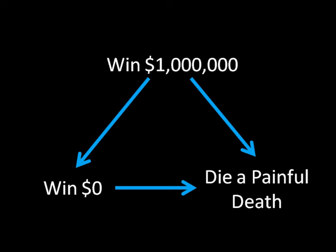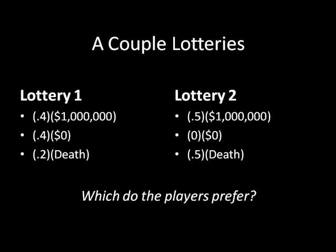And prefer winning a million dollars to dying a painful death. And that's important to know. But what about if we mix these things up and we said all of these things can happen? What are your preferences going to be there? Here's an example of this.